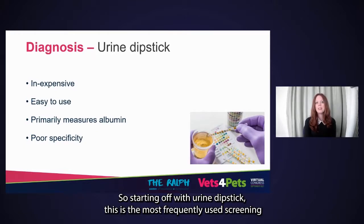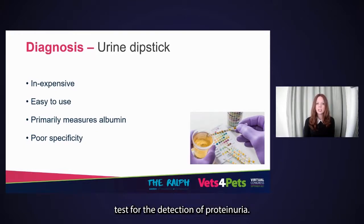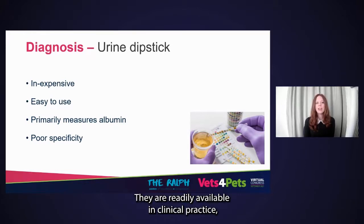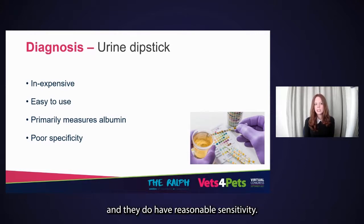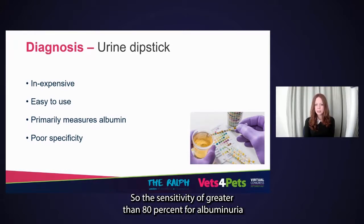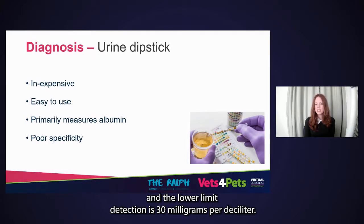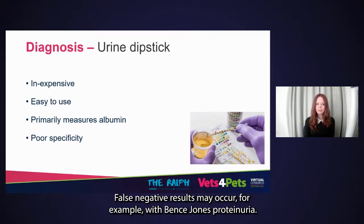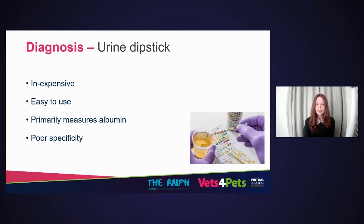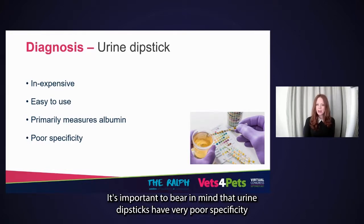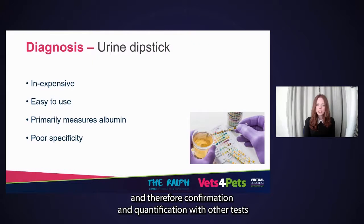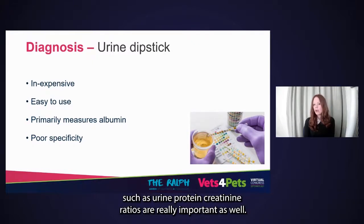Starting with urine dipstick: this is the most frequently used screening test for the detection of proteinuria. They are easy to use, readily available in clinical practice, and have reasonable sensitivity — greater than 80% for albuminuria — with a lower limit of detection of 30 milligrams per deciliter. False negative results may occur with Bence-Jones proteinuria, dilute urine, or acid urine. It's important to bear in mind that urine dipsticks have very poor specificity, and therefore confirmation and quantification with other tests such as urine protein creatinine ratio are really important.